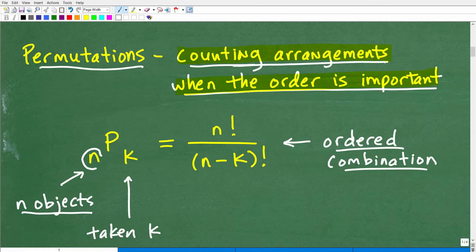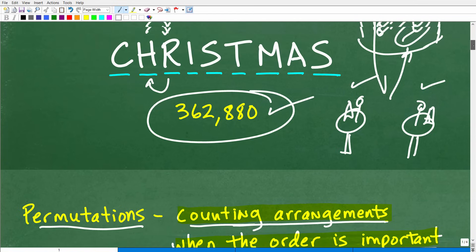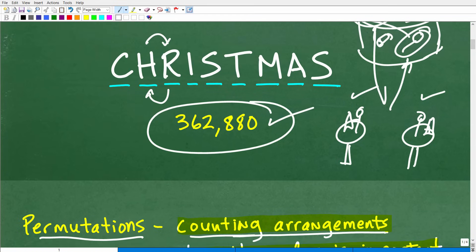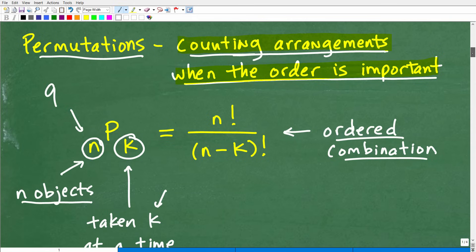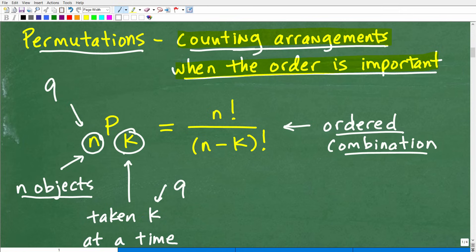So again, a good way to think of permutations is an ordered combination. All right. Well, what is the N and what is a K? Don't worry about this little exclamation stuff here. I'm going to explain this to you in a second. So N is N objects. Okay. So how many objects do we have here? We have nine letters. Okay. Nine letters and the word Christmas and K is how many of these letters we're going to take at a time. So for example, if I asked you, not how many different arrangements we could have out of the word Christmas, what if I said, how many different three letter arrangements could we have? Okay. So in that case, I would only be using three letters out of the total of nine, but in this particular problem, we're going to be using all nine letters. Okay. So that's what the K is.